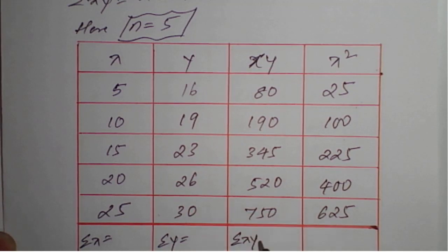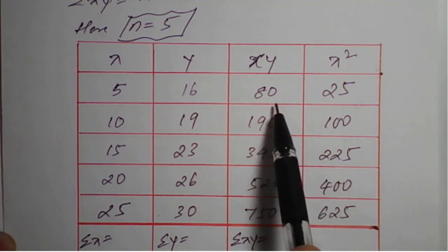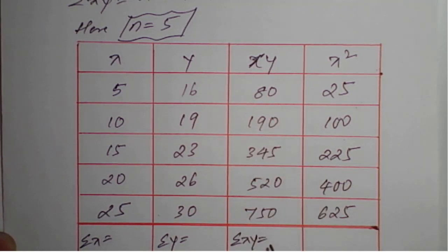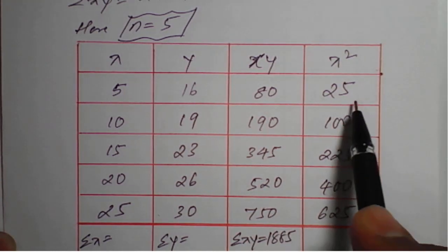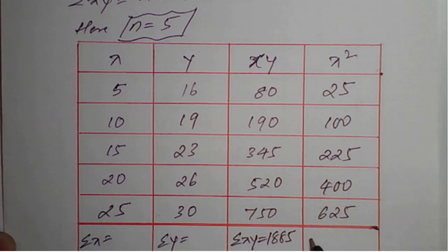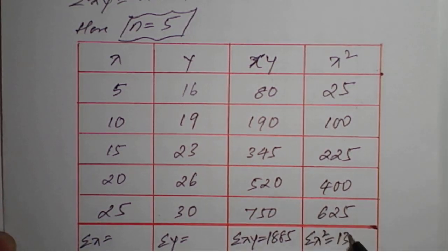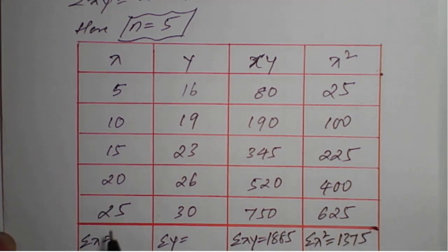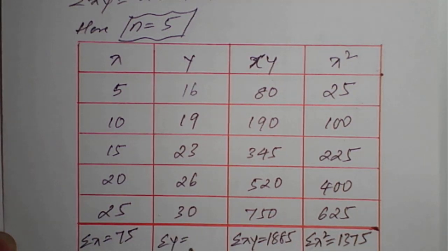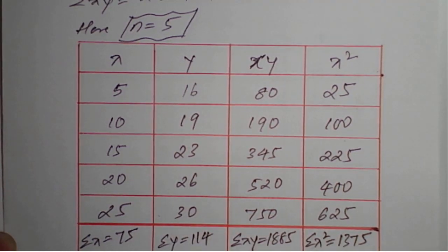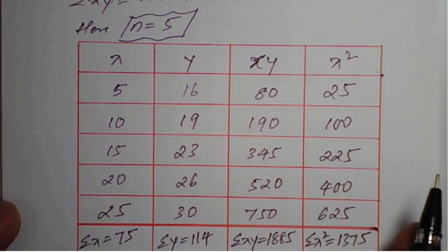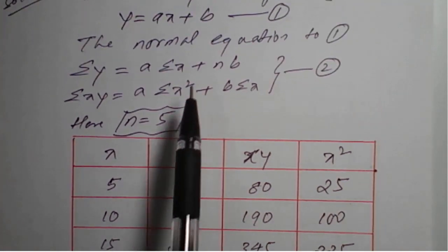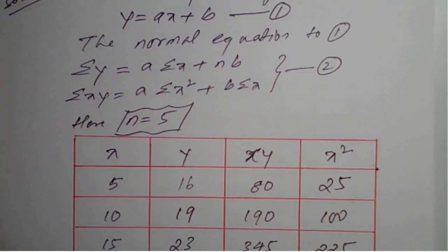We need to calculate summation xy. On adding all these values we will get 1885. Then on adding all the values of x square, we will get summation x square as 1375. Summation x here will be 75. Summation y will be 140. These summation values we need to apply in equation number 2.